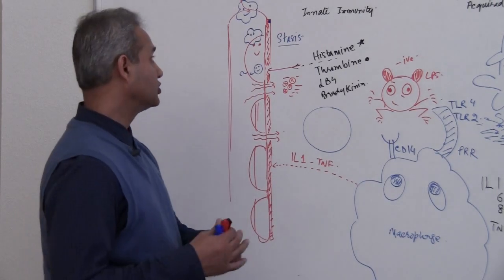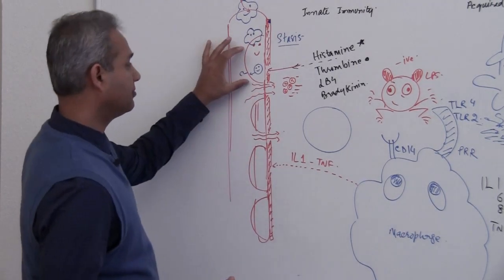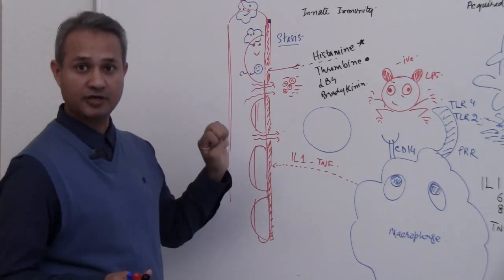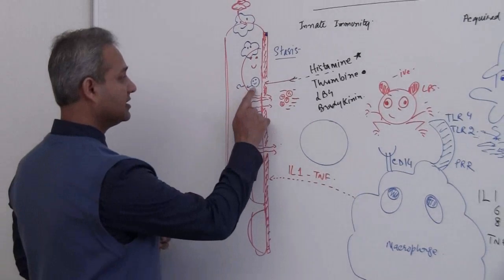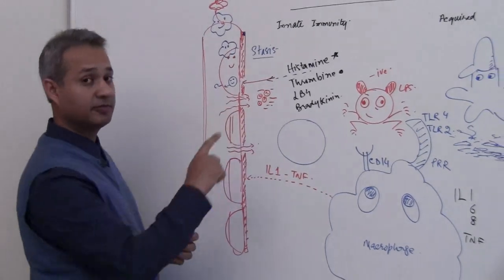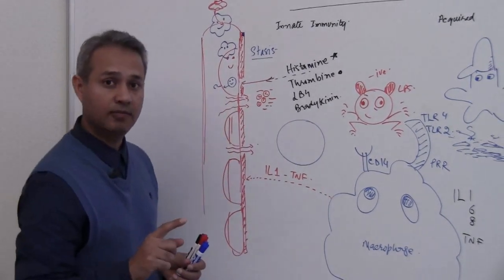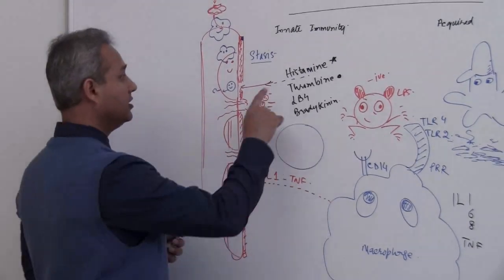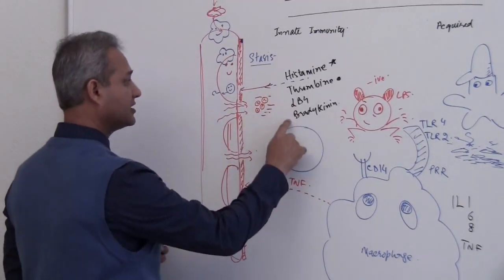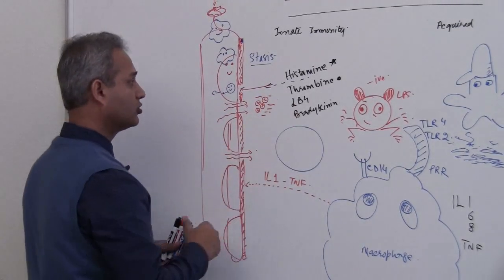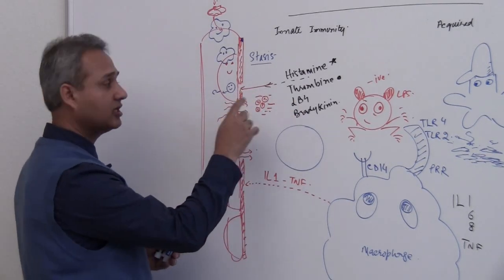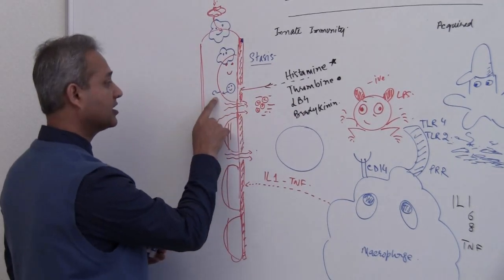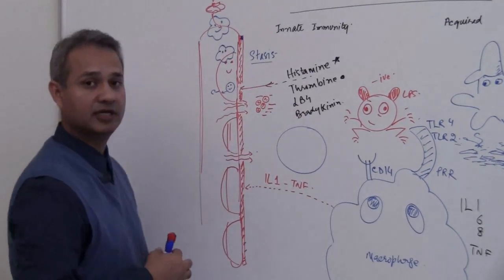Welcome back. We were talking about P-selectin. What happens is that the selectin is sitting in the Weibel-Palade body. Histamine and thrombin act on the endothelial cell, and the selectin comes out on the outer side.